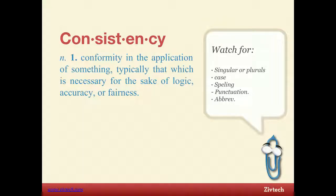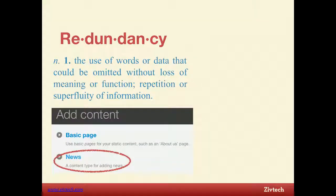Be consistent with your use of abbreviations. Redundancy is never useful — we're making complex systems here, so you shouldn't be adding information that's redundant. Here's an example: someone created a news content type and their description was 'a content type for adding news.' If you don't have any additional information to share, don't share anything at all. It just gets in everyone's way because they had to read something redundant.